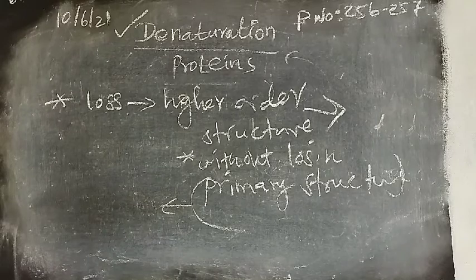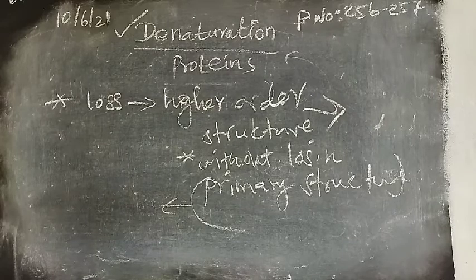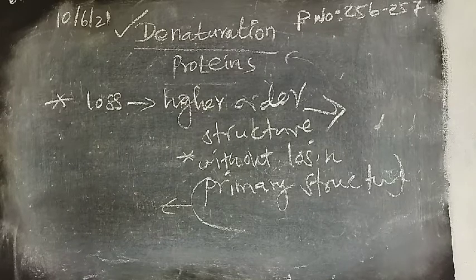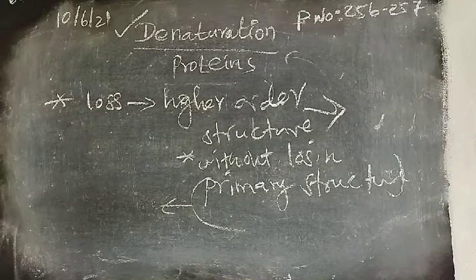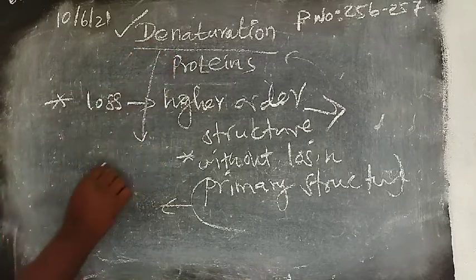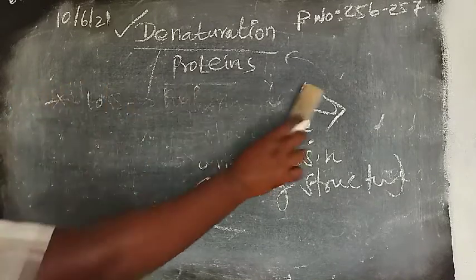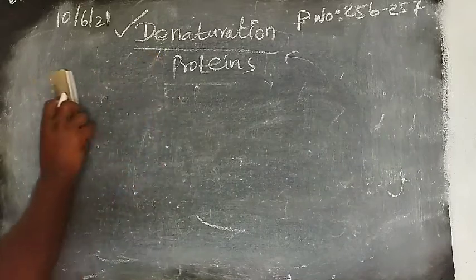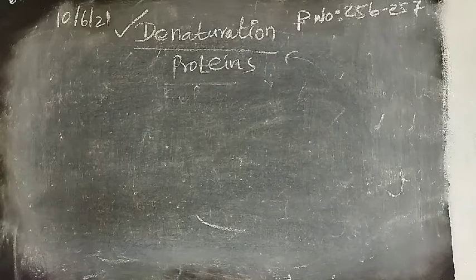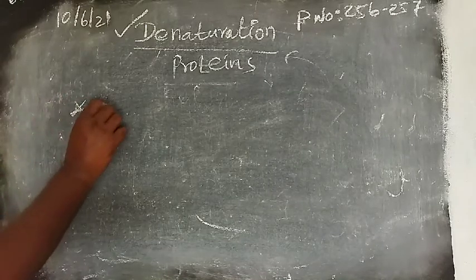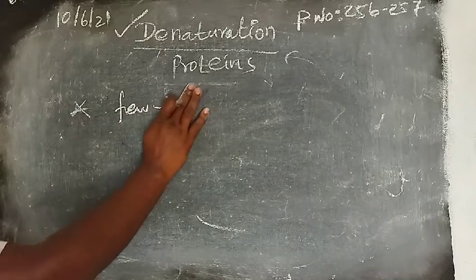When protein denatures, many biological functions is also lost. That means protein may have some particular biological function. Due to this denaturation, it may lose its function. Once denaturation takes place, maximum they are irreversible. There are some exceptions. Only the exceptional proteins, because of their primary structure is intact, they can be reversed. So, only very few proteins can be reversible.